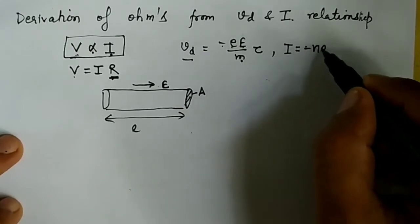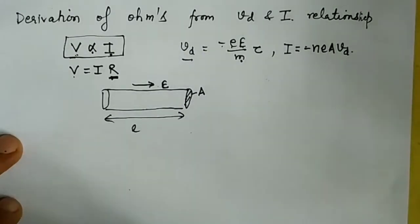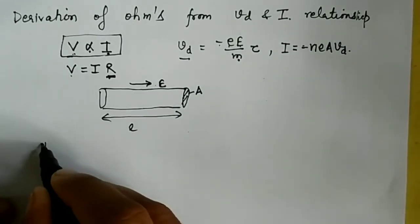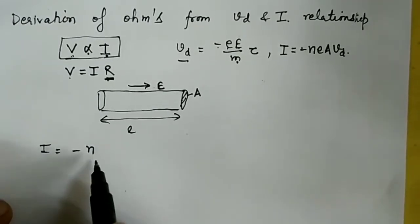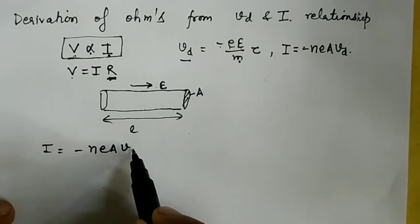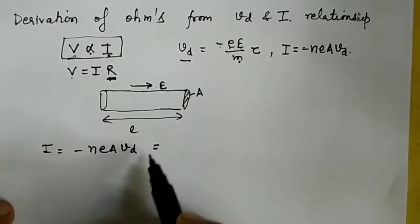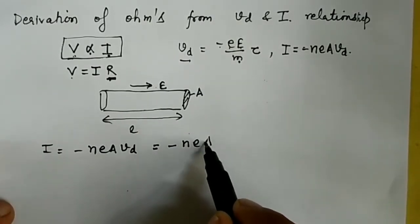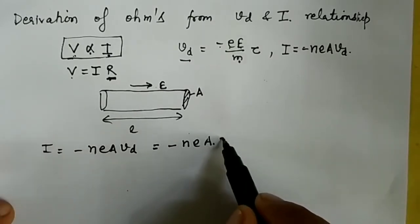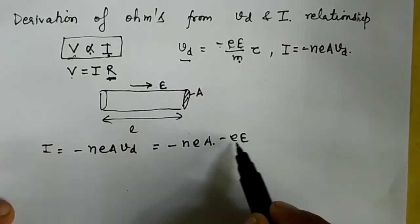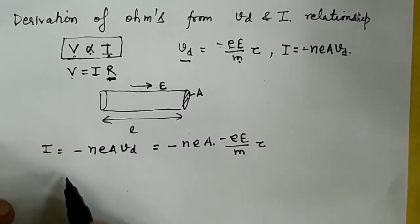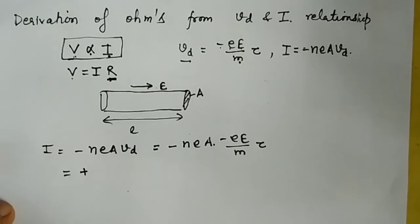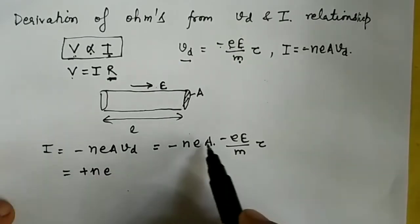Using this current equation, I equals minus n e A vd, we put the value of vd. We get minus n e A times vd, which is minus e capital E divided by m times tau. Minus minus becomes plus, giving us n e squared A tau E divided by m.